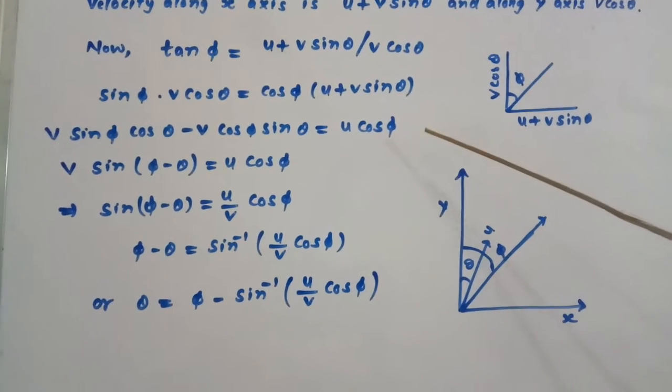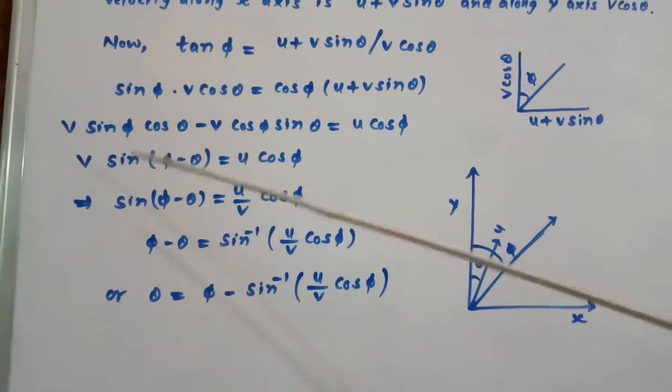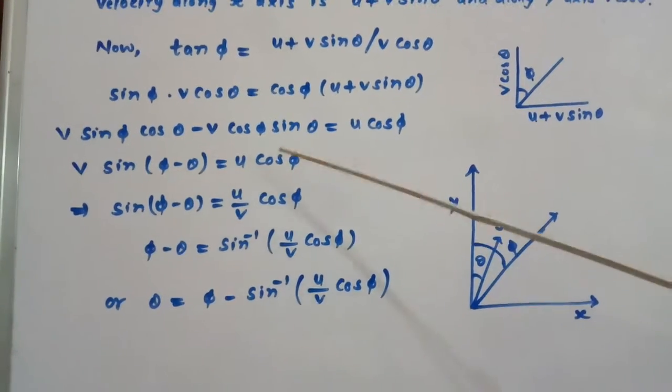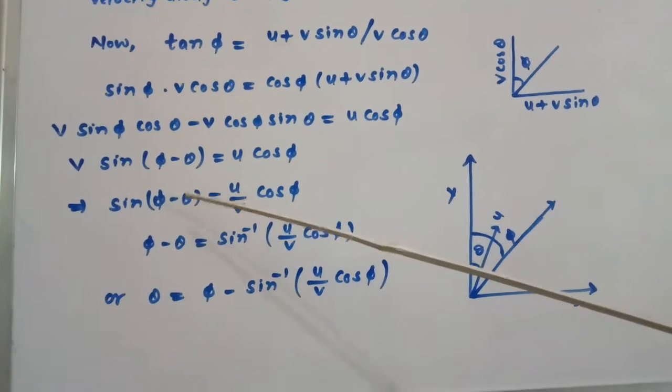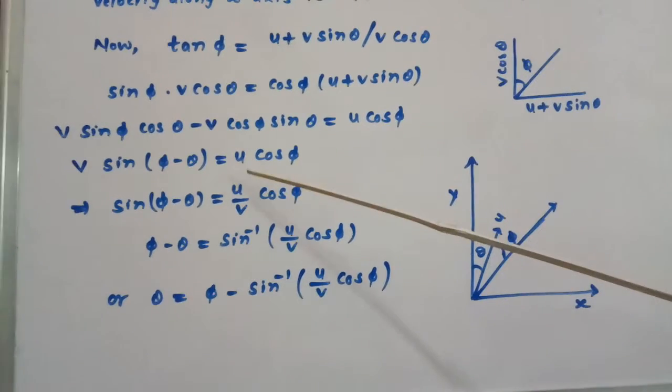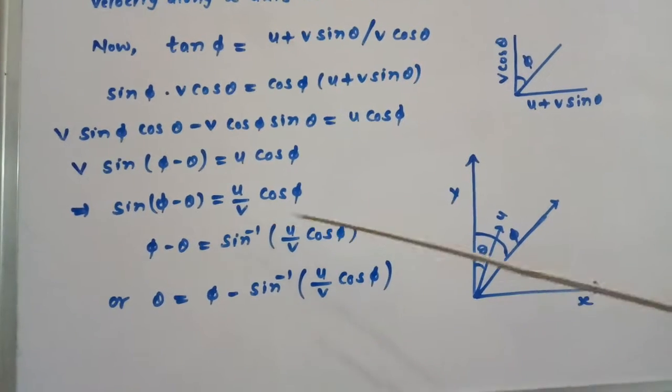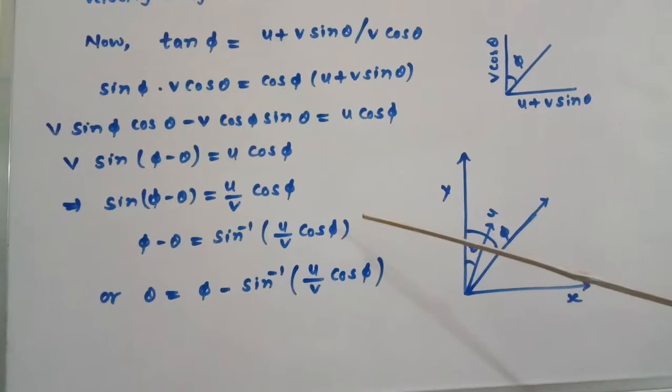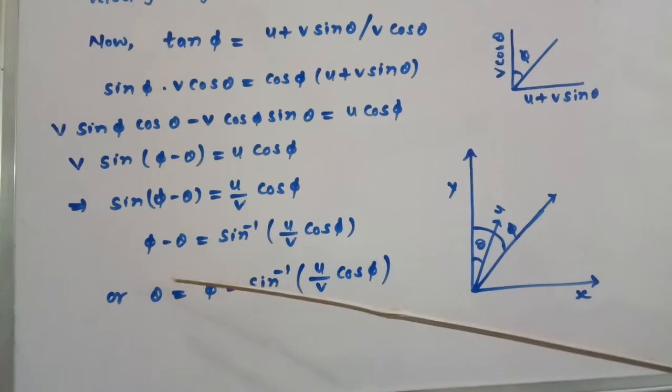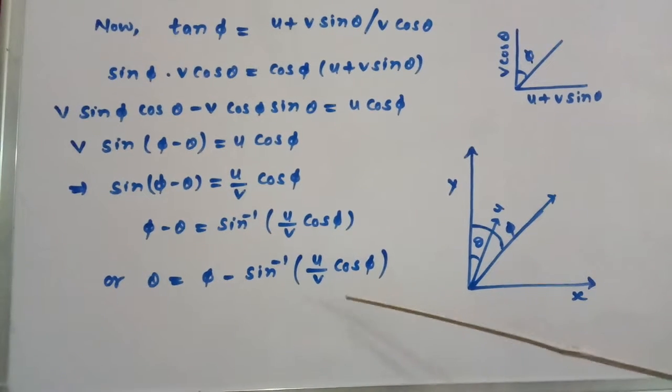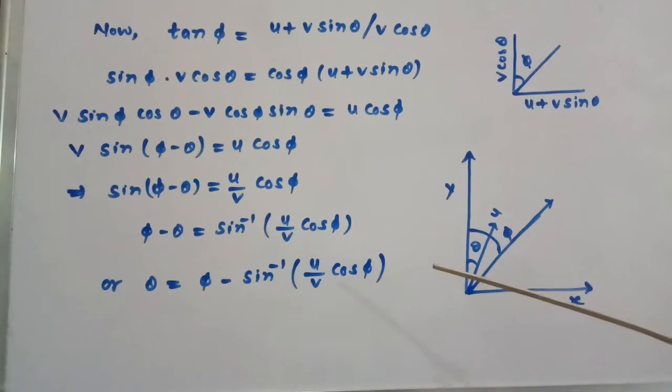Or V sin (phi minus theta) equals U cos phi. Or sin (phi minus theta) equals U upon V cos phi. Or phi minus theta equals sin inverse of (U upon V) cos phi, which is our answer. Thank you.